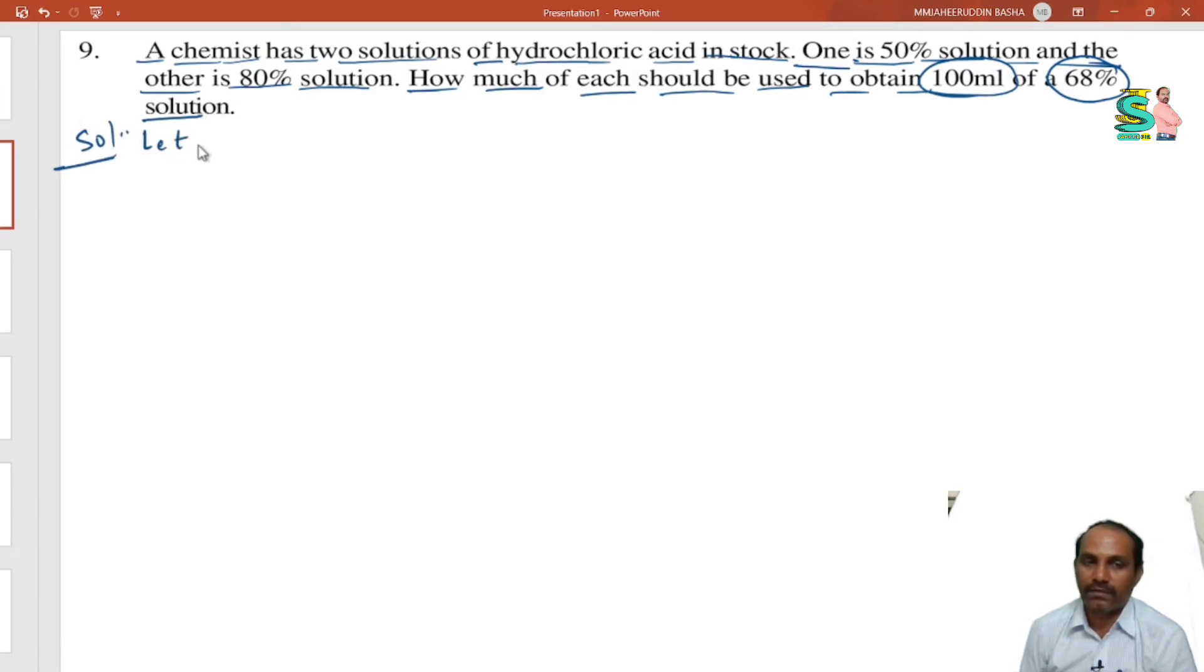Let the first solution contain 50 percent acid and second 80 percent acid. Already given, we take the first and second. First and second, we give the two names there.